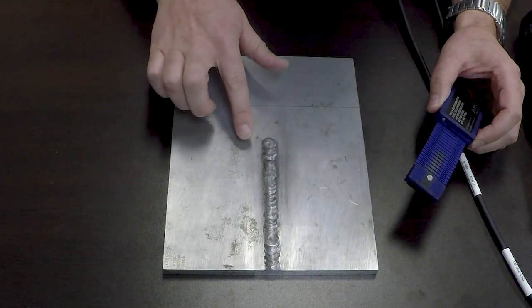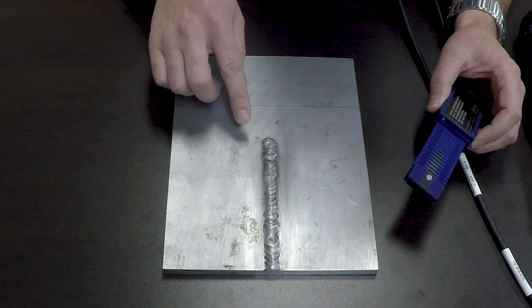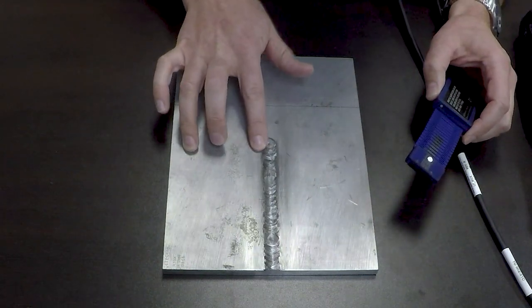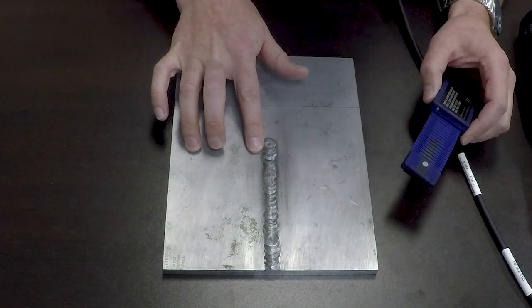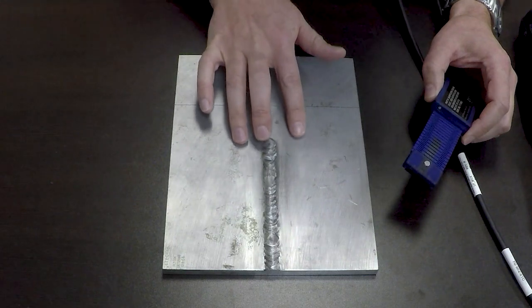Then the third pass, you go over the crown of the weld to pick up all of the flaws that are along the top.